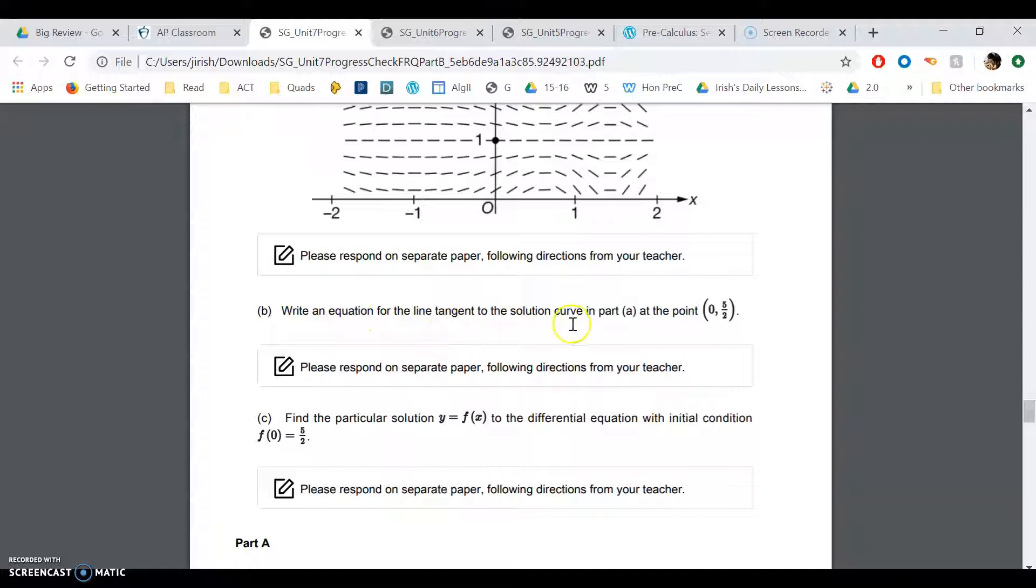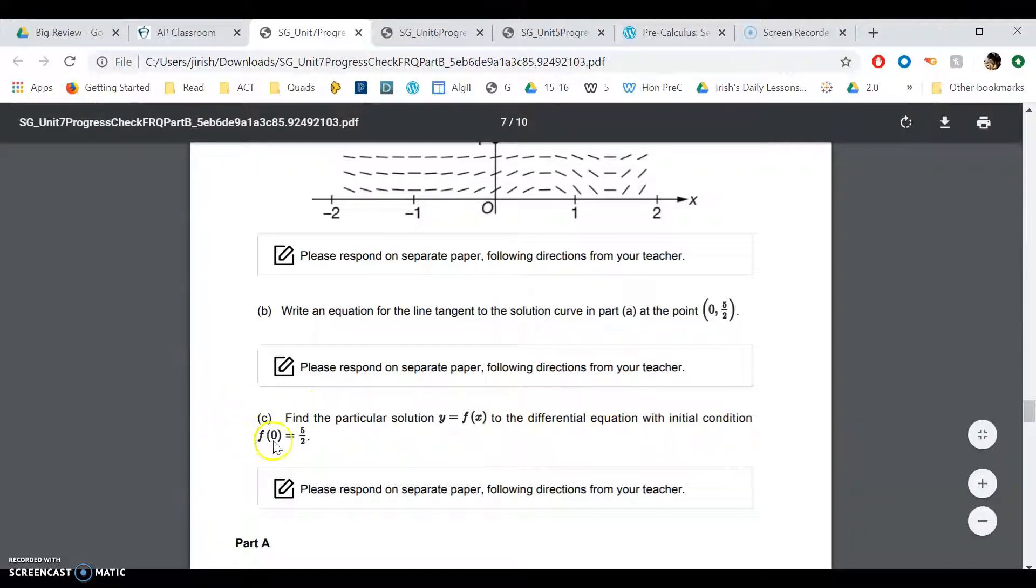Part B: Write an equation for the line tangent to the solution curve in part A at point (0, 5/2). Part C: Find the particular solution y = f(x) to the differential equation with the initial condition f(0) = 5/2. So those are the two points. I want you to try B and try C right now. Pause the video.